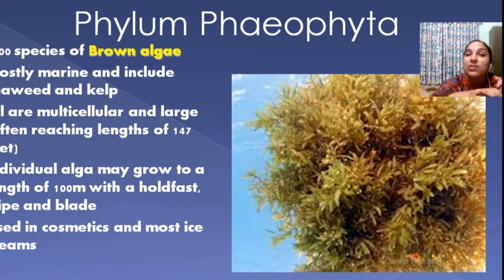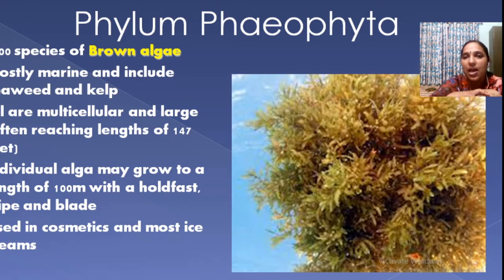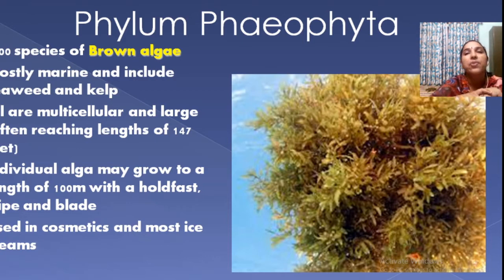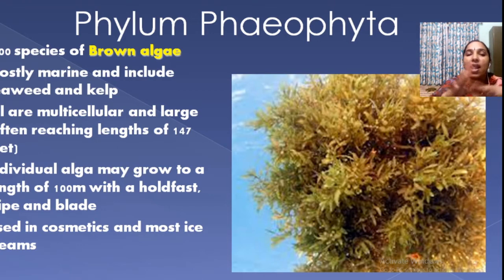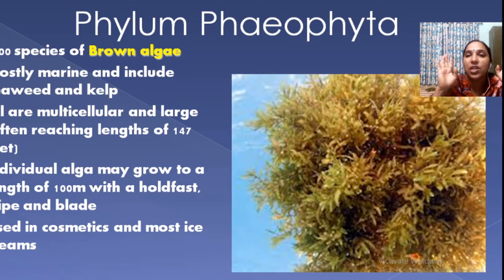They are known as seaweeds or kelp — kelp forests or seaweeds. They are multicellular forms and are usually large, having a length of up to 147 feet.